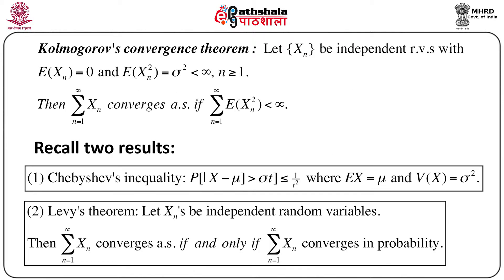The statement of Kolmogorov's convergence theorem is as follows. Suppose x_n is a sequence of independent random variables where the expectation of x_n equals 0 and the expectation of x_n squared equals sigma_n squared, which must be finite for every n greater than or equal to 1. So sigma_n squared is the variance of x_n. Then we can say that the summation x_n, n equals 1 to infinity, converges almost surely if the summation of expectation of x_n squared is less than infinity.